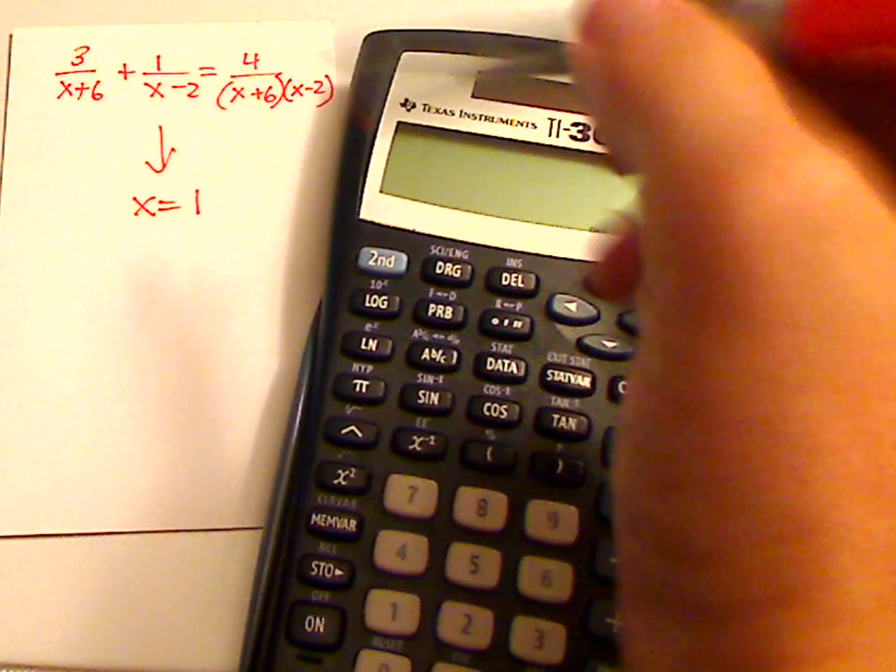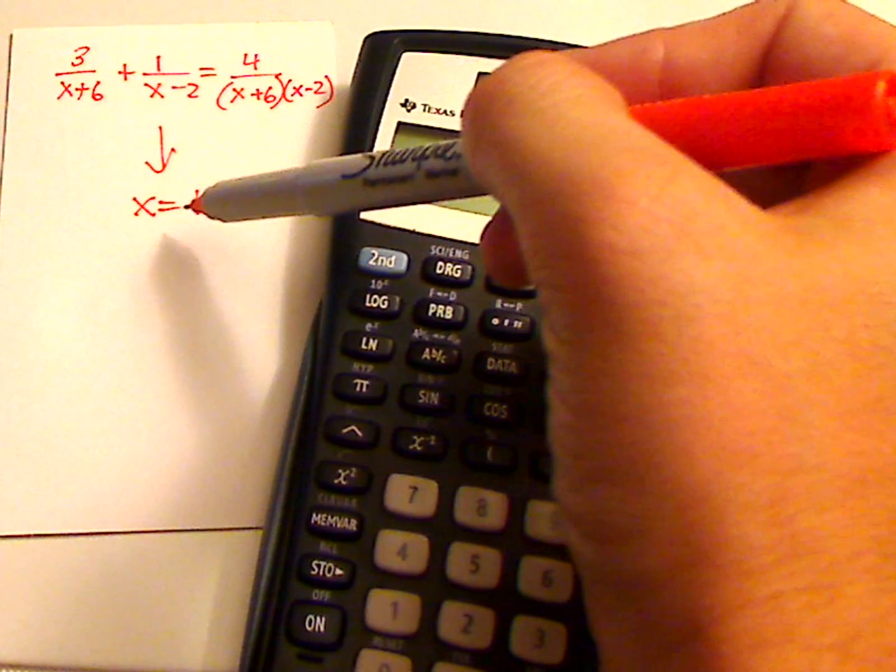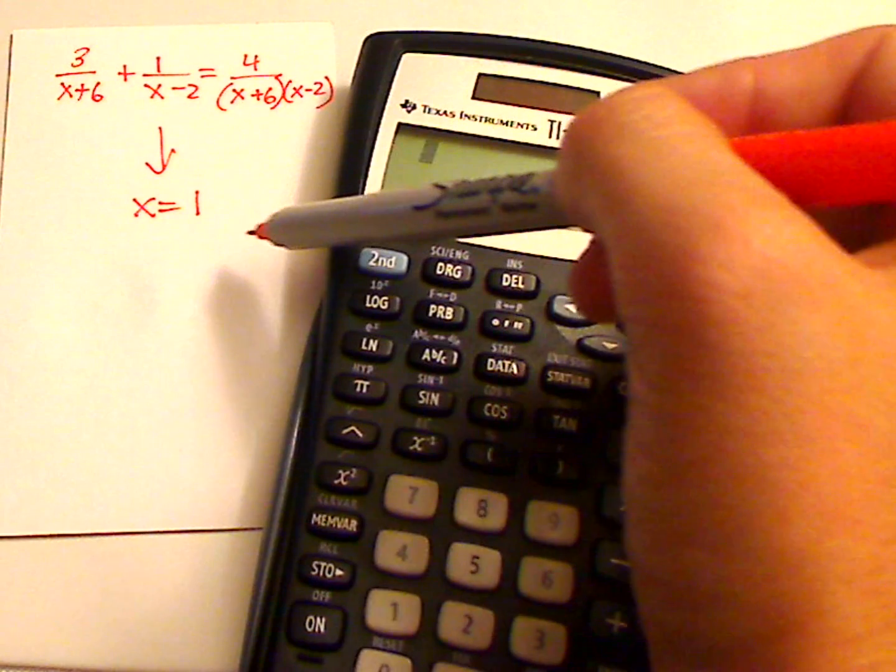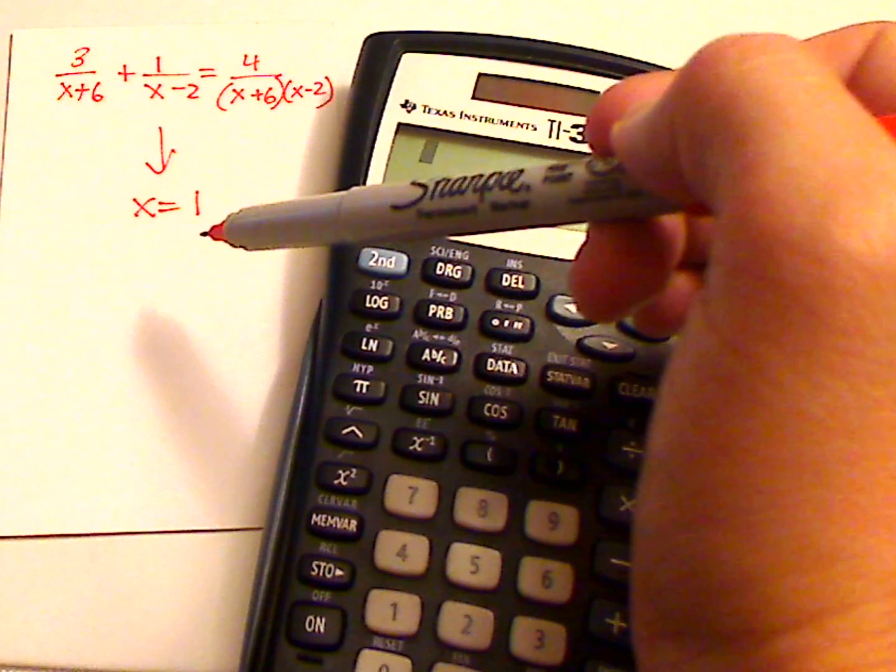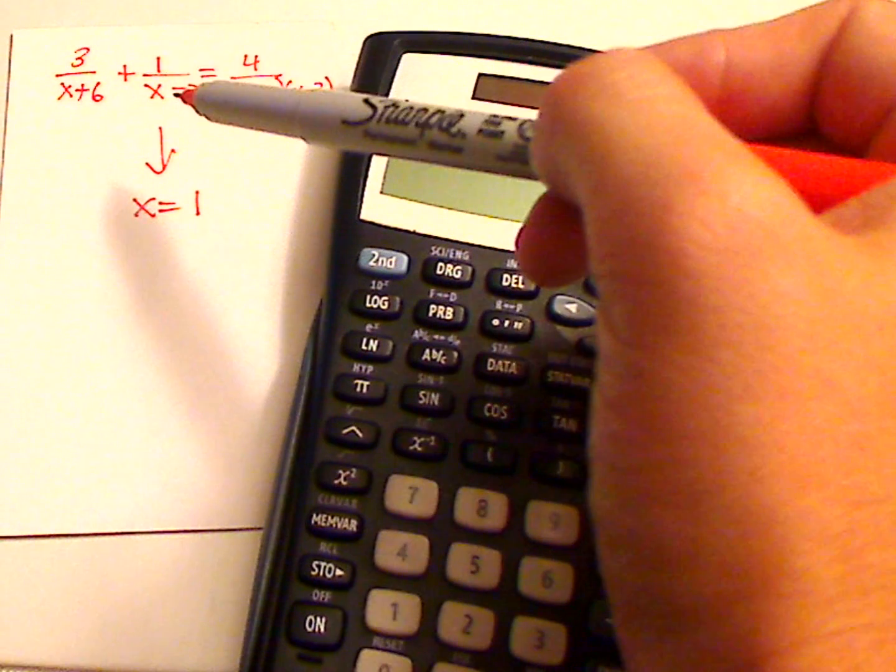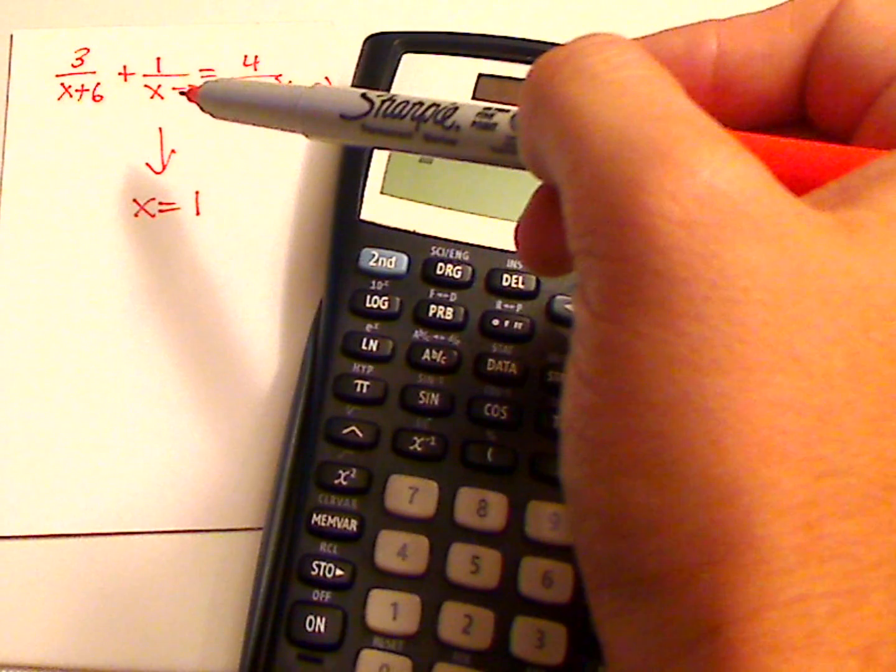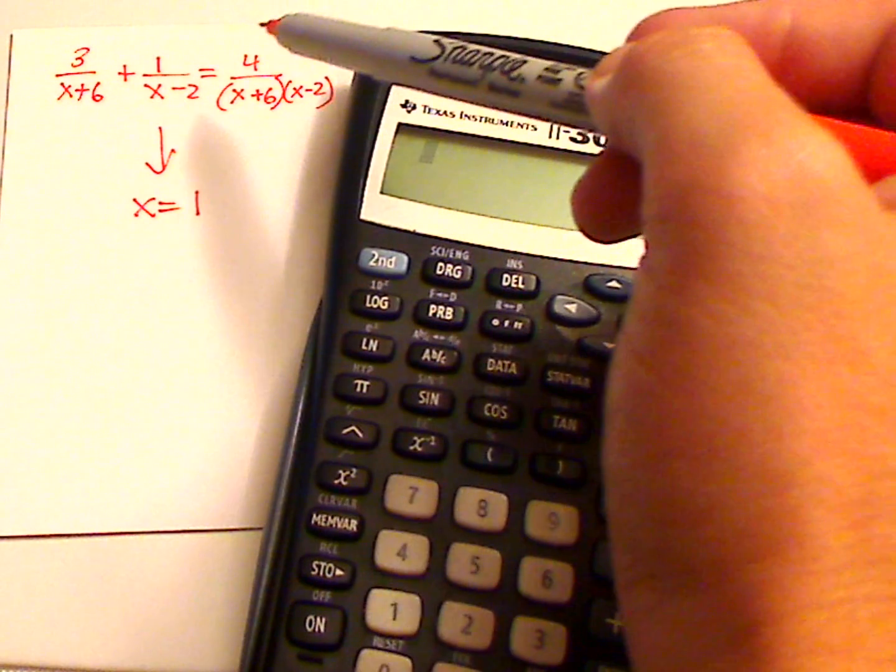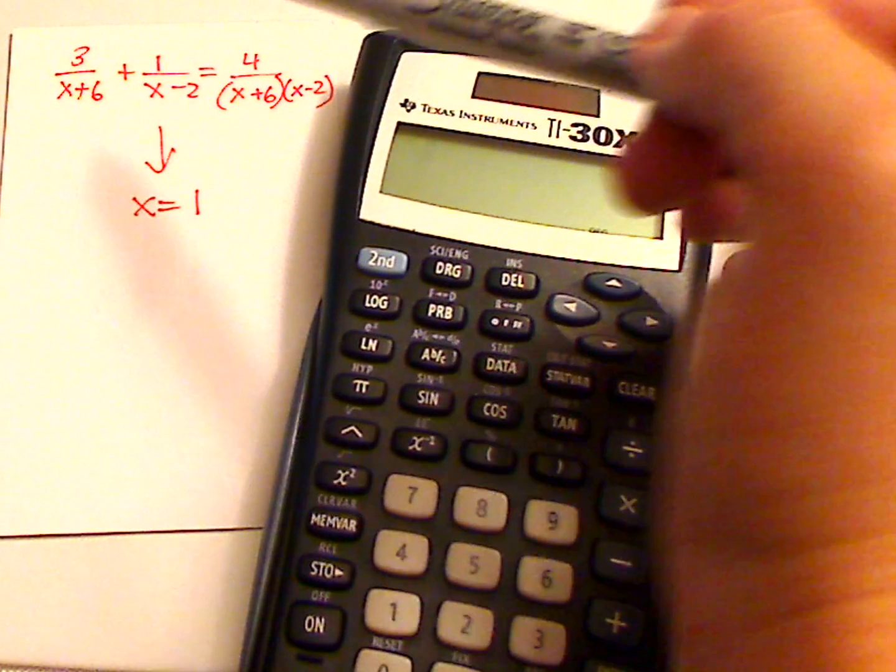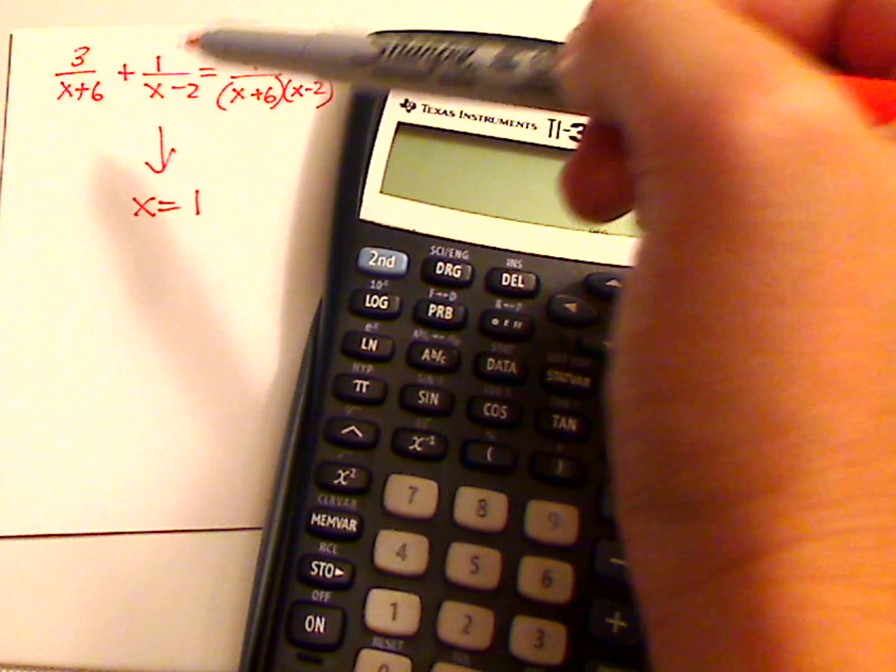So let's say that you did all your work and you get x equals 1. Now you want to check your answer. You can plug it in, find a common denominator, do all those things and then see if both sides are equal. You can do that.